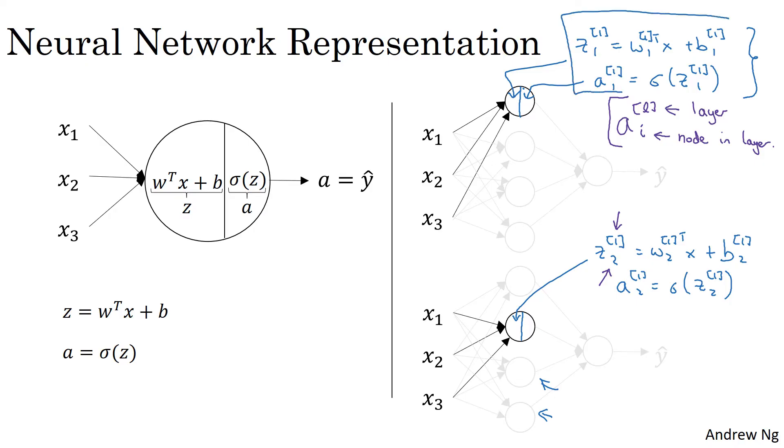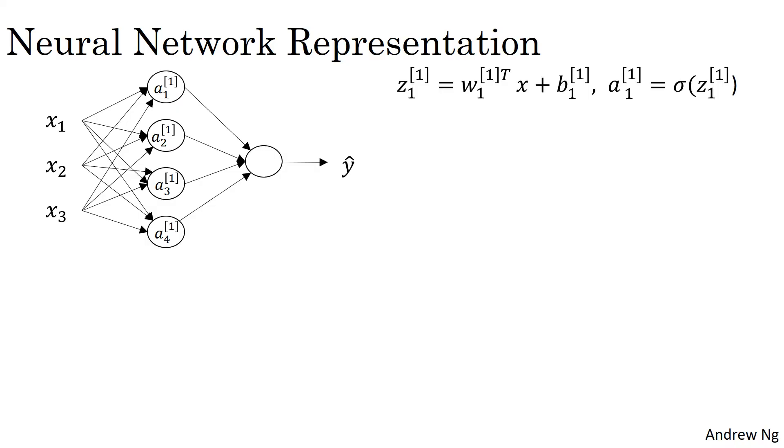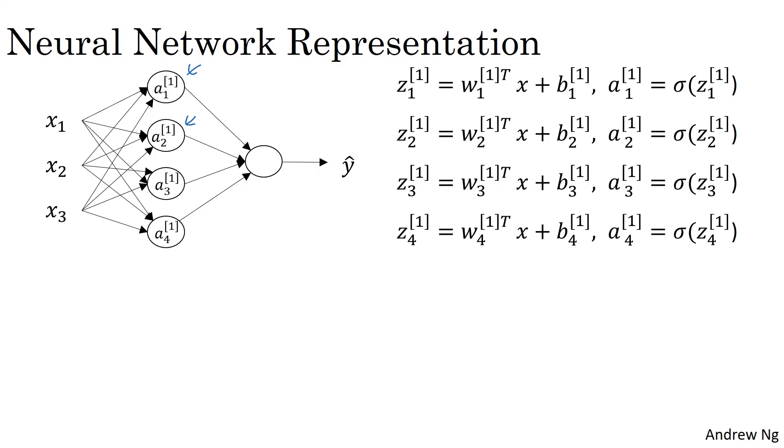So now let me take this pair of equations and this pair of equations and let's copy them to the next slide. So here's the neural network and here's the first and here's the second equations that were worked out previously for the first and the second hidden units. If you then go through and write out the corresponding equations for the third and fourth hidden units, you get the following. And so let's make sure this notation is clear. This is the vector w11. This is a vector transpose times x. So that's what the superscript t there represents. This is a vector transpose.